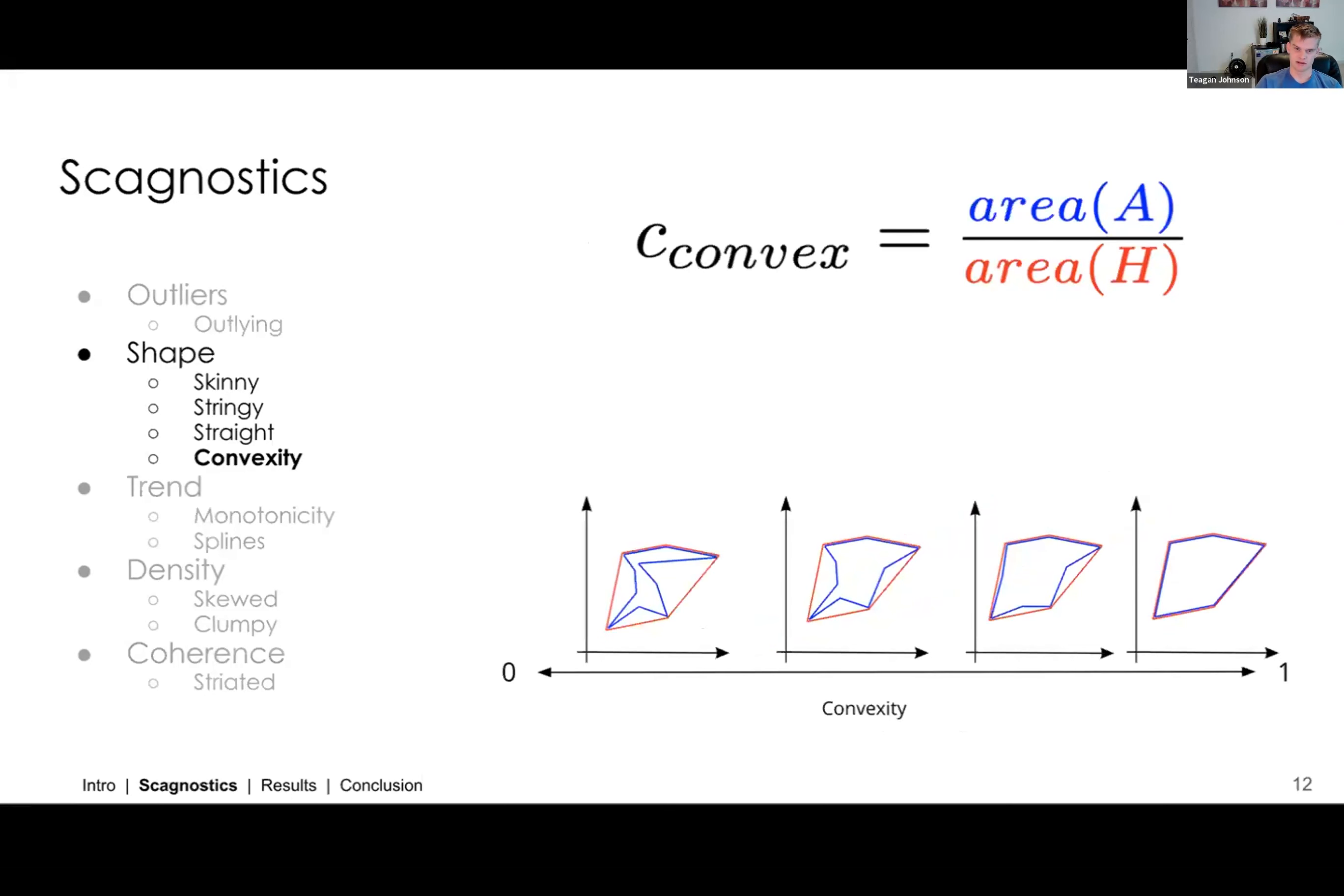And if you go to the next slide, we have a quick illustration of how we determine how close convexity is between zero and one. So if the area of the alpha hull is lower, if it's much smaller than the area of the convex hull, we get a measurement closer to zero. But as you keep on increasing the area of the alpha hull, you get a measurement closer to one. And so this is just one example of a scagnostic. There's 12 different scagnostics in total.